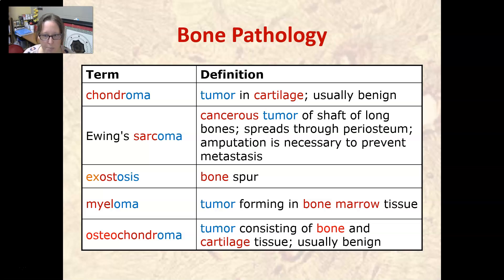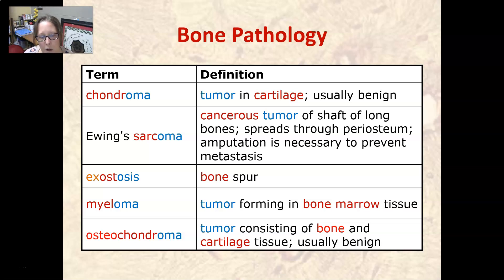Exostosis is a bone spur. Myeloma is a tumor forming in the bone marrow of the tissue. There's a disease called multiple myeloma. Osteochondroma is a tumor that consists of bone — that's osteo — and cartilage — that's chondro — and oma always means tumor. It is usually benign.